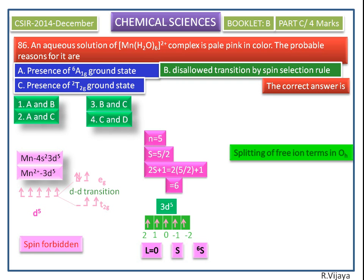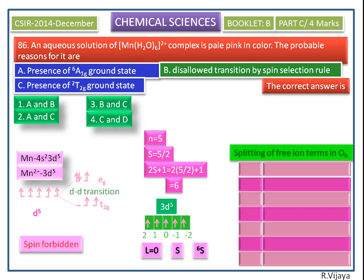Next we see the splitting of free ion terms in octahedral geometry. Here S, P, D, F, G, H, and I irreducible representations are shown here.